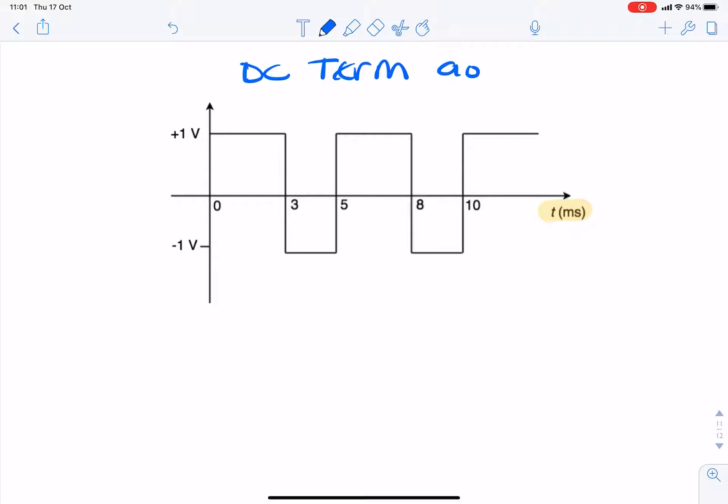So remember, the DC term is simply the integral from 0 to T of x of t, nothing else. So it's like finding the area and dividing it by the period. And we have a periodic signal, clearly.